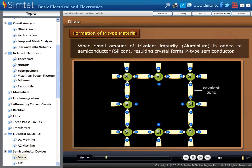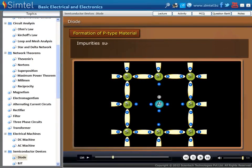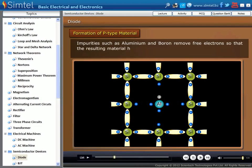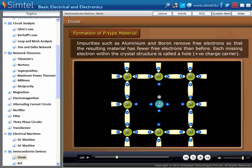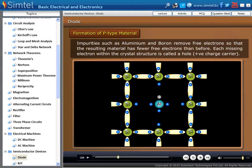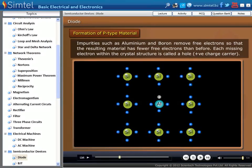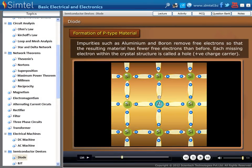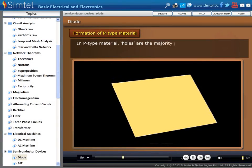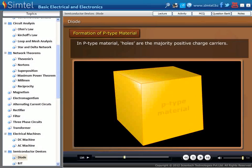resulting crystal forms P-type semiconductor. As we see in an animation, trivalent impurity atom aluminium is added in a crystal of silicon atoms. Impurities such as aluminium and boron remove free electrons, so that the resulting material has fewer free electrons than before. Each missing electron within the crystal structure is called a hole. So in a P-type material, holes are the majority charge carriers.